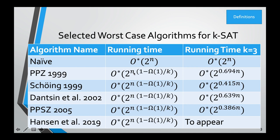There are some worst-case running time algorithms for KCNF-SAT. Many of these algorithms have different runtimes for K equals 3, but in the limit of large K they all have the same asymptotic runtime. Some of them are better than others for finite K, but these represent the state of the art worst-case algorithms for K-SAT.